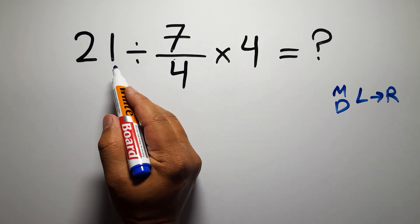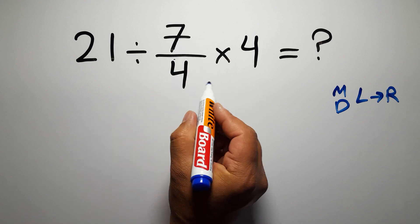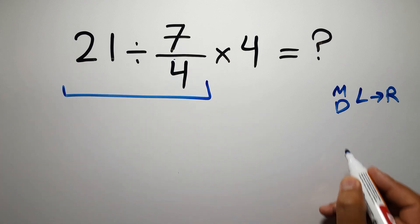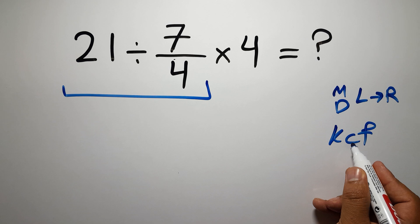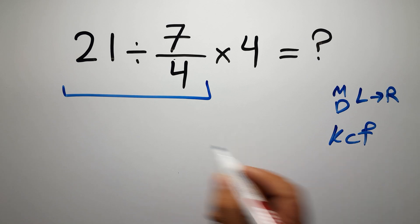Okay, so first this division: 21 divided by 7 over 4. According to the KCF rule, K stands for keep, C stands for change, and F stands for flip.